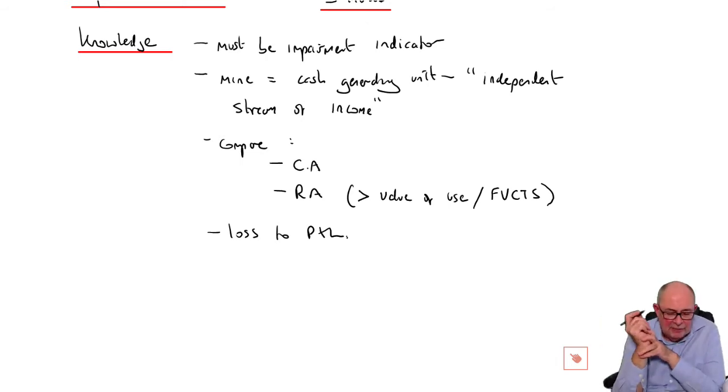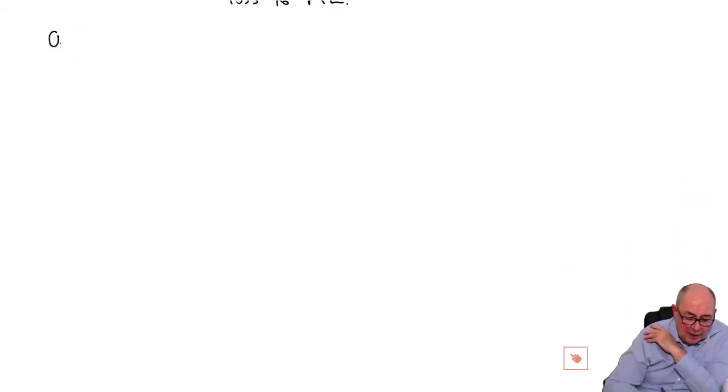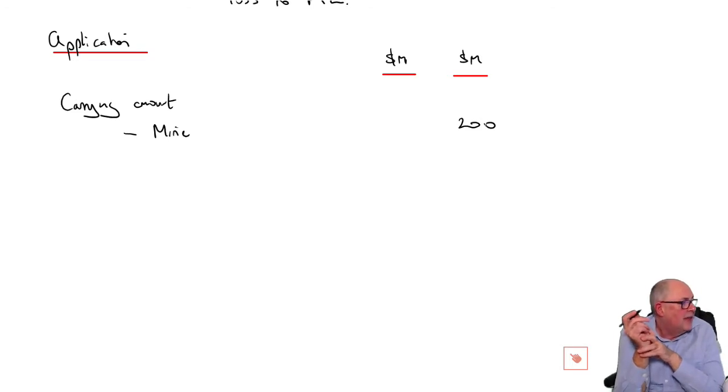And finally, any impairment loss normally goes to the profit and loss. So it's as if you're almost like a doctor giving a lecture to your patient before you examine them. So there's a couple of marks of relevant knowledge. Now, let's have a look at these numbers here. Once we've got a mark out of the numbers, we've passed. But it would be nice to get it all right, wouldn't it? So I'm now going to apply that to the scenario.